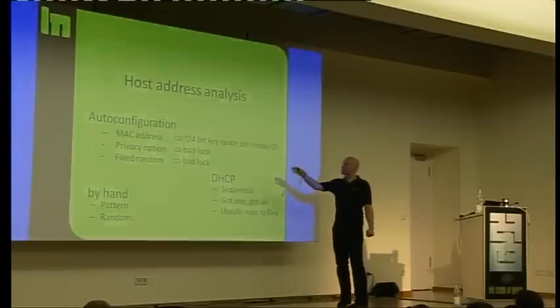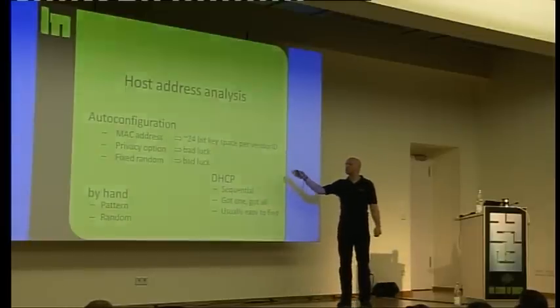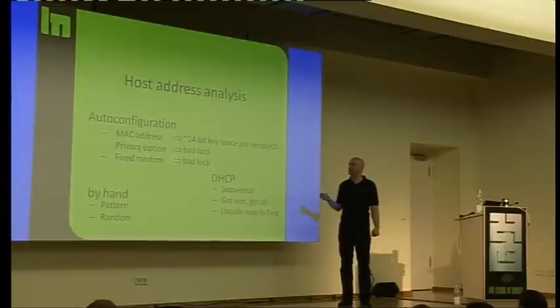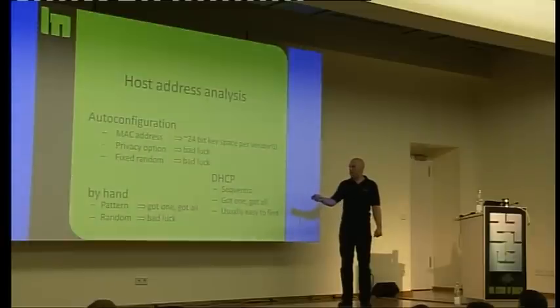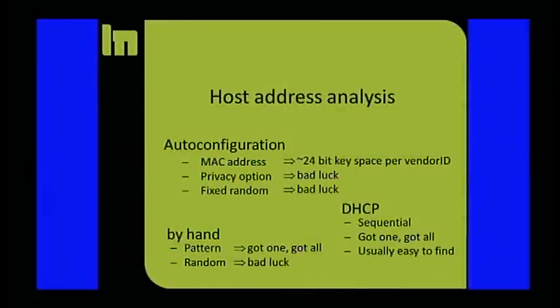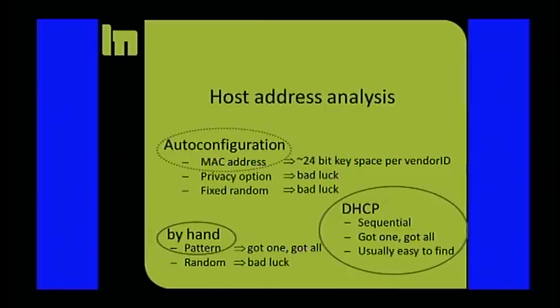With a MAC address, you have a 24-bit keyspace per vendor ID. This is scannable. Privacy option fixed, bad luck. By hand, if it's a pattern, easy. If the random, doesn't work. DHCP, if you find an address in a DHCP address space, piece of cake. Autoconfiguration, if they use the MAC address for that, it's also kind of easy.